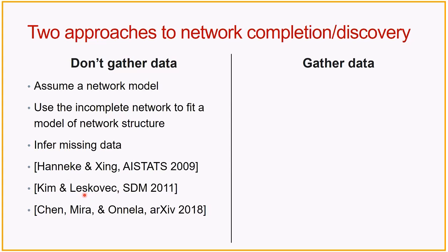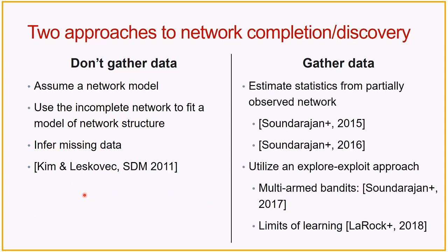What we've been working on is: I have some budget and I want to go collect some data. We've been working on two things. One is, can I estimate some statistics from a partially observed network? Can I have an unbiased estimator of the degree distribution, or the number of triangles, or the average number of triangles per degree? The other has been: can I actually learn or utilize an explore-exploit model to increase the observability of my data? I'm going to focus on utilizing an explore-exploit approach to collect more data and reduce my partial observability, and I'm going to talk about limits of learning within this setup.